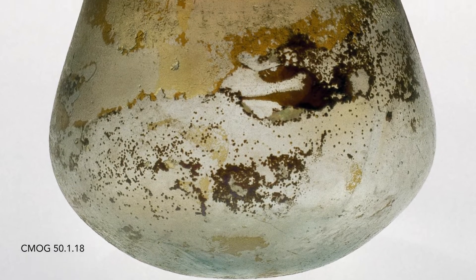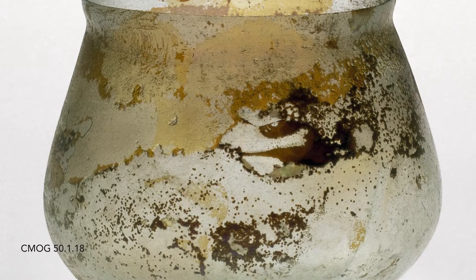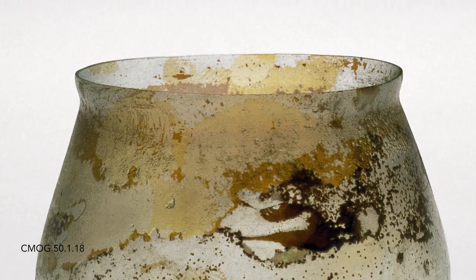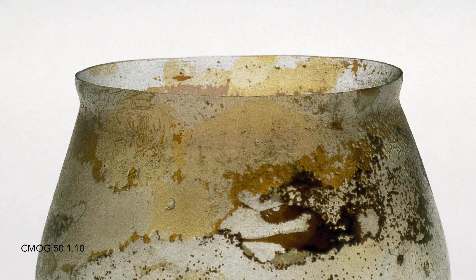Roman beakers, or cups, are of two types. Those with furnace-finished rims, those with cracked-off rims. And this is one with a cracked-off rim.